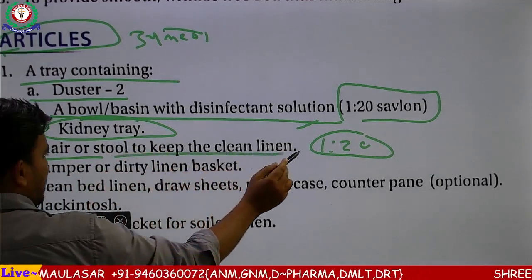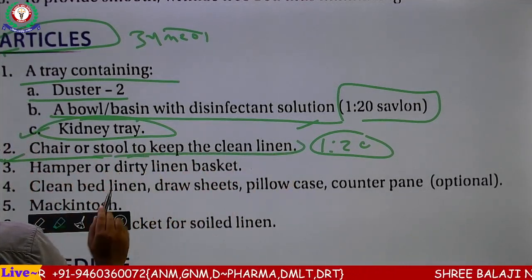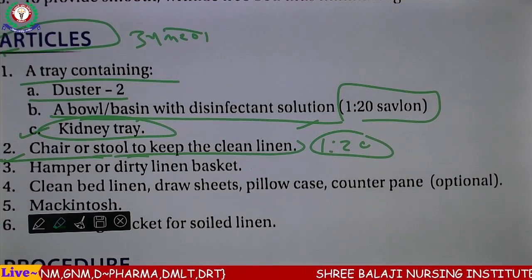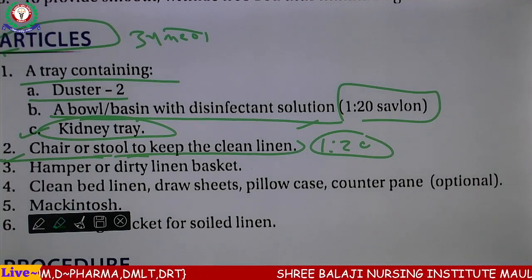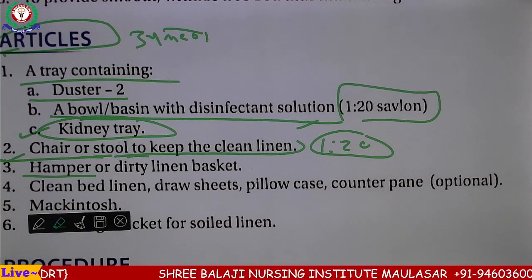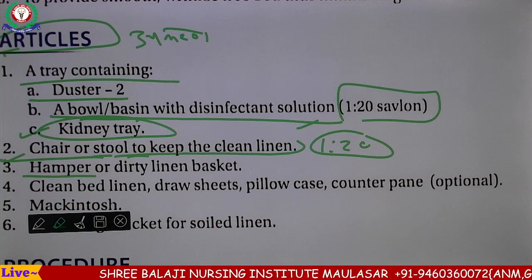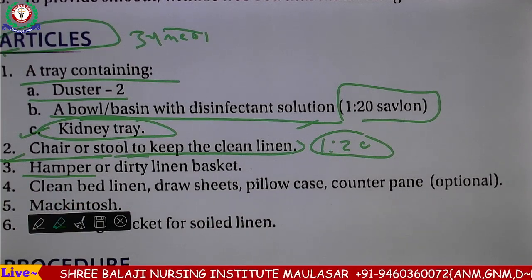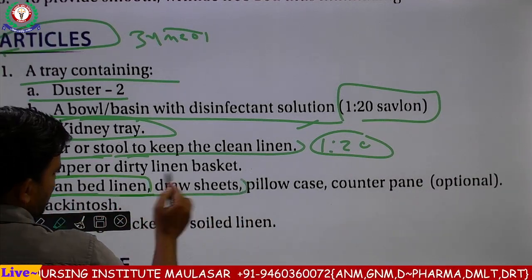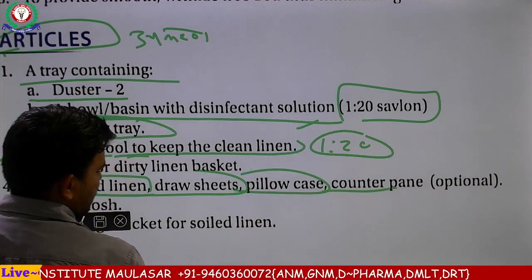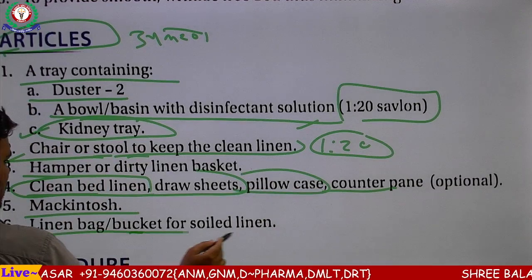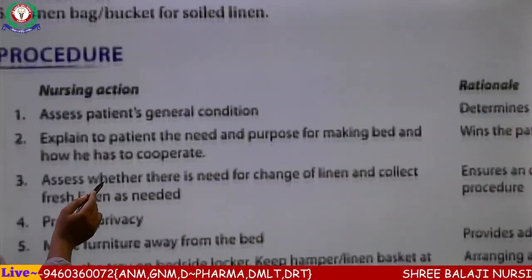Chair, stool — keep in clean linen — साफ-सुथरा linen होना चाहिए, कपड़े होने चाहिए। उसके बाद में hamper — dirty linen basket — गंदा linen डालने के लिए एक टोकरी होनी चाहिए, basket होना चाहिए। Clean bed sheet linen, draw sheet होनी चाहिए, pillow होना चाहिए, counter plan, macintosh होना चाहिए, linen bag, buckets and soiled linens — ये सब article होने चाहिए। अब है procedure।